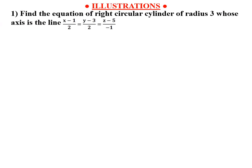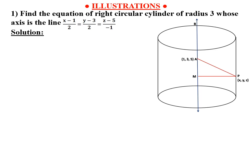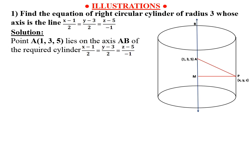Now we will see some examples based on the right circular cylinder. Example 1: Find the equation of RCC of radius 3 whose axis is the line (x − 1)/2 = (y − 3)/2 = (z − 5)/(−1). Solution: From the given data, the radius PM = 3. The fixed point A on the axis has coordinates (1, 3, 5), and the direction ratios of axis AB are 2, 2, −1.